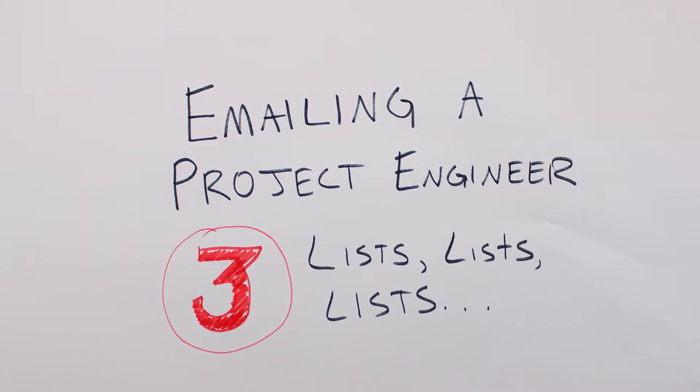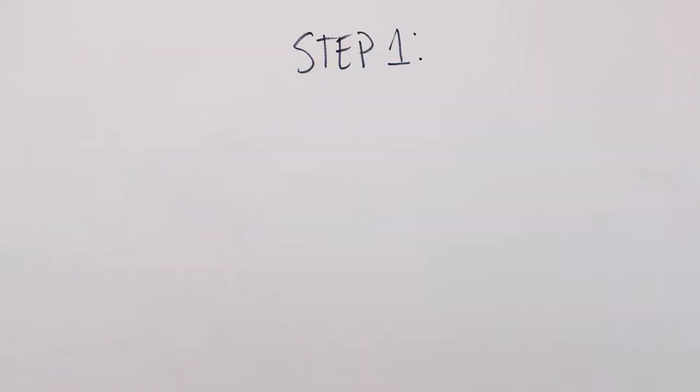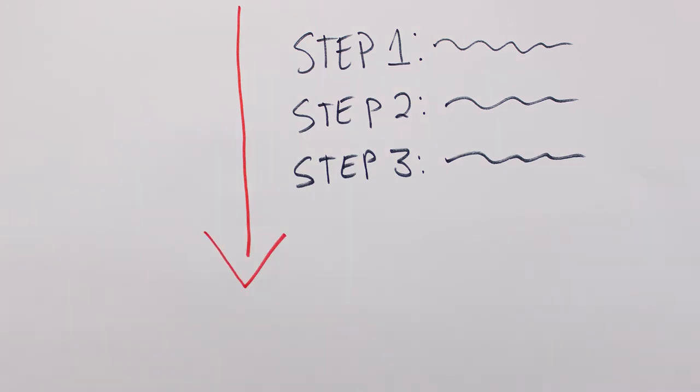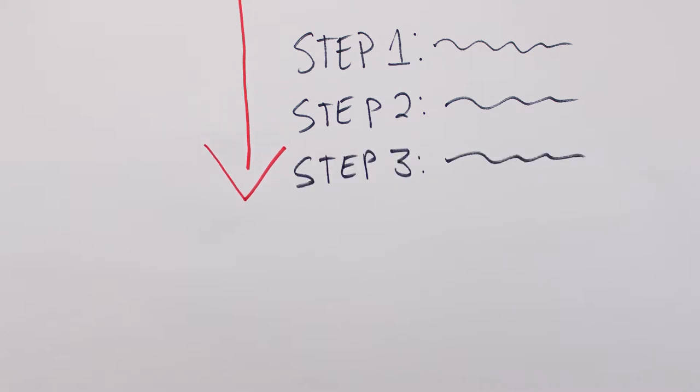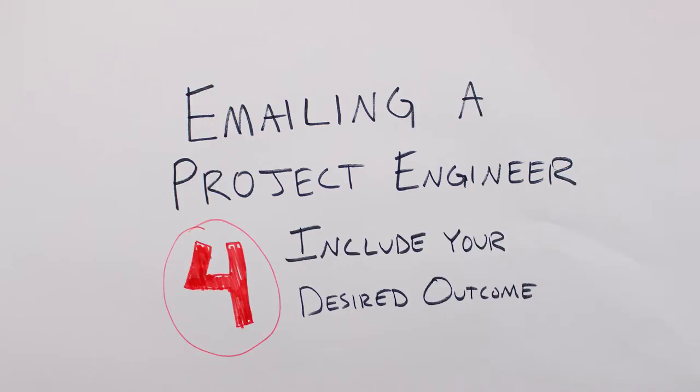Lists, lists, lists. Engineers tend to be linear thinkers, meaning they think in lists. Present company included. Finish step one, then move to step two. If you create an email that has no paragraphs, just a list of action items, you just about guarantee that the email will get acted upon in a timely manner.